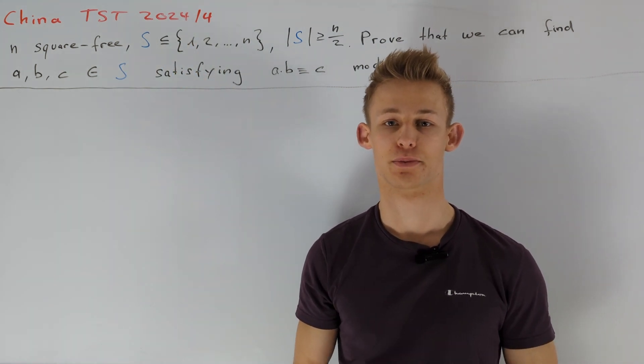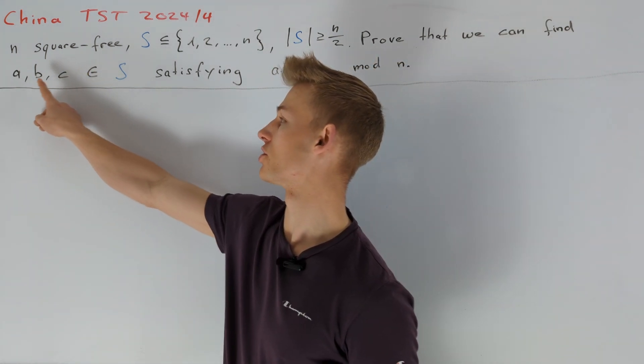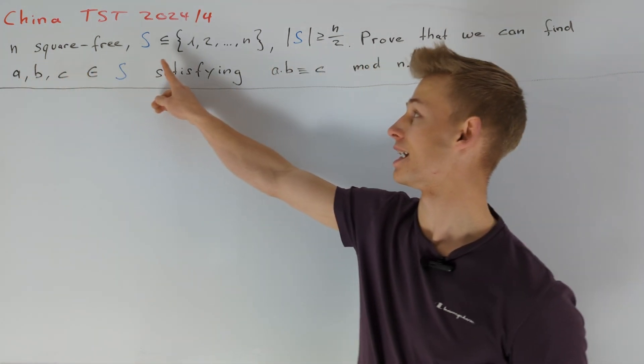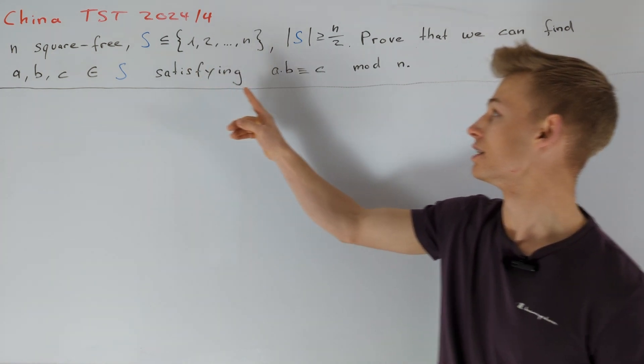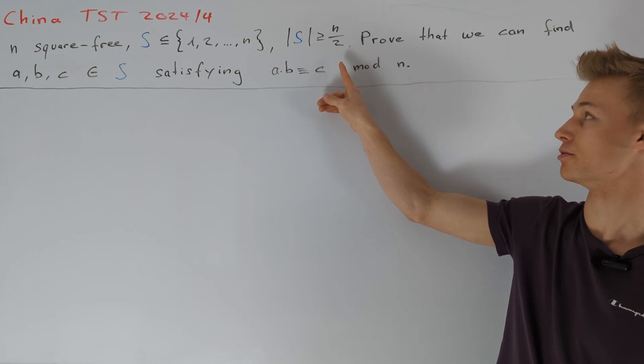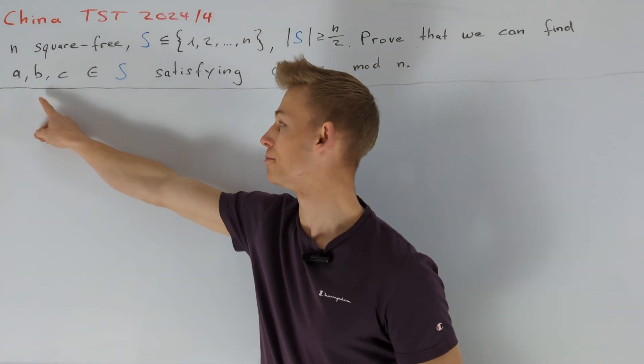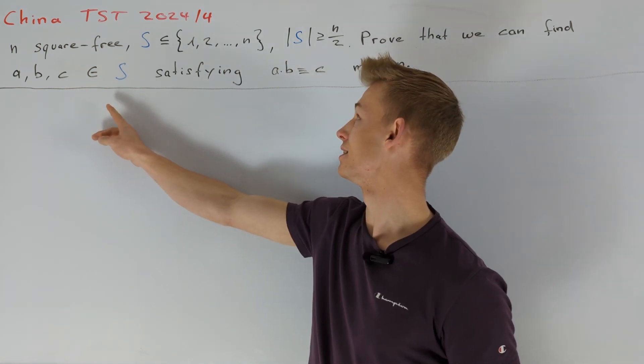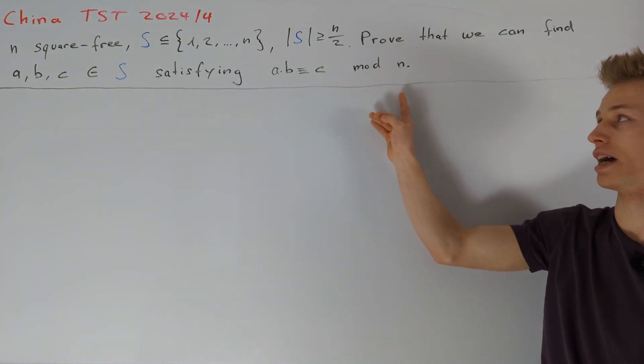At first, let's have a look at the problem statement. We are given a square-free positive integer n and a subset S of the integers from 1 to n. Moreover, the cardinality of S is greater than or equal to n divided by 2. Now, our task is to prove that we can find a, b, and c in S such that a times b is congruent to c modulo n.